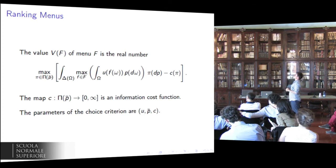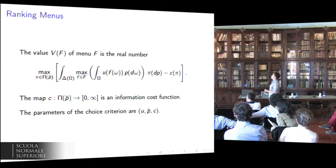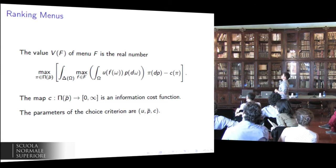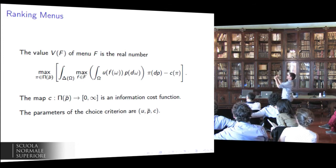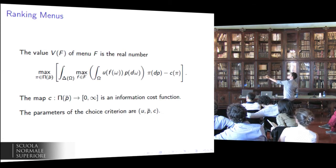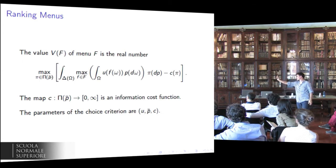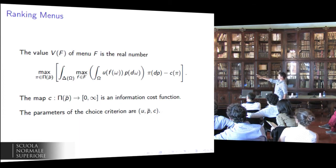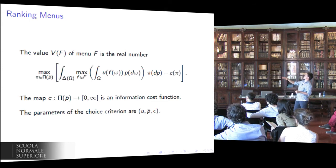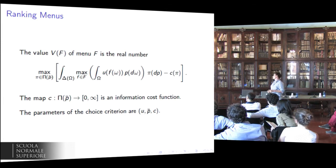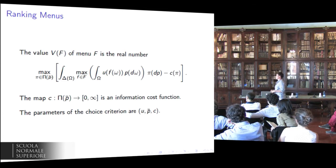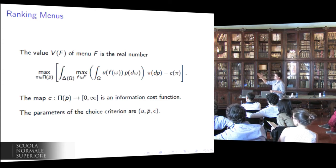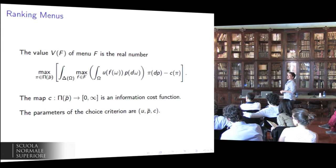The objective of the first stage of the optimization problem is in square brackets. It is to maximize the value of information, which is the first term of this sum, minus the cost of information, which is C of pi. This is done by optimally choosing a channel, maximizing pi in the set of channels. The subjective costs of paying attention are represented by C, by the information cost function, while the rationality component in the allocation of attention is represented by the optimal choice of a channel.